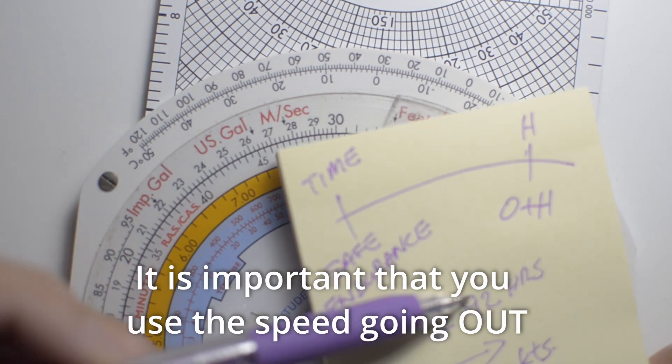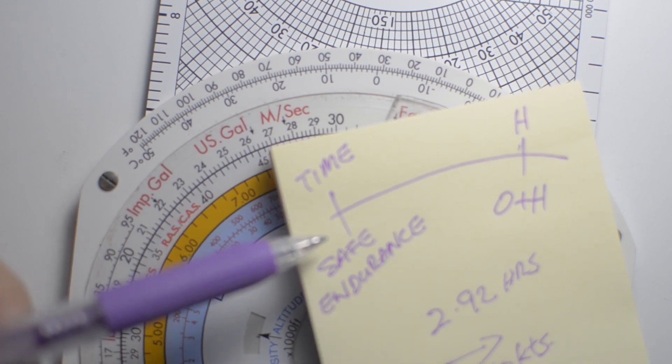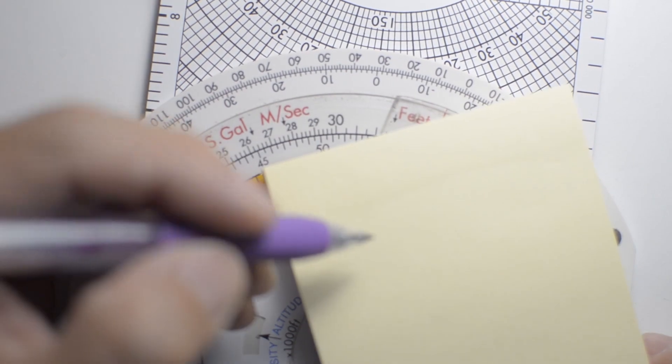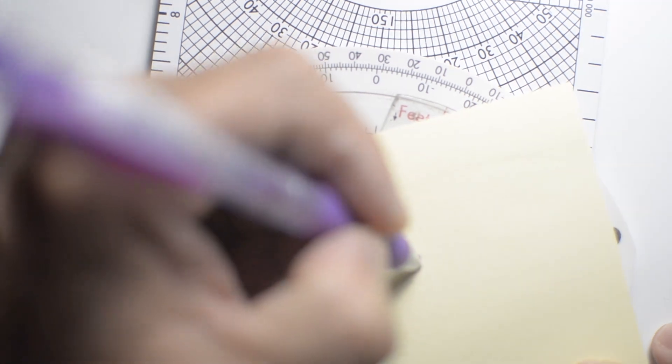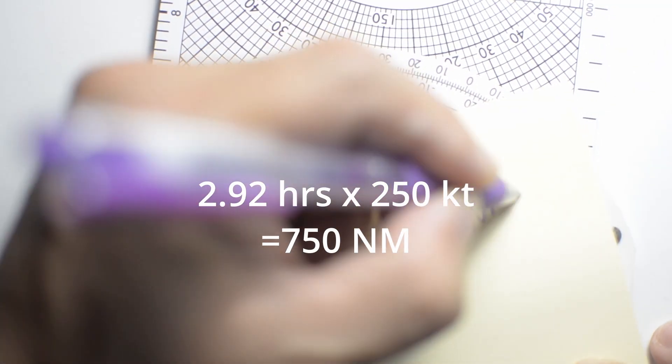2.92 hours at 250 knots gets me the distance to go to reach our point of safe return. And that gives me approximately 730 nautical miles.